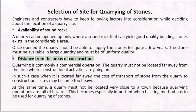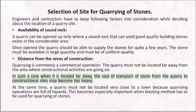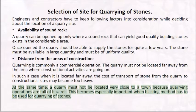Distance from the areas of construction: quarrying is commonly a commercial operation. The quarry must not be located far away from areas where constructional activities are going on, as the cost of transport may become too heavy. At the same time, a quarry must not be located very close to a town because quarrying operations are full of hazards, especially when the blasting method has to be used.